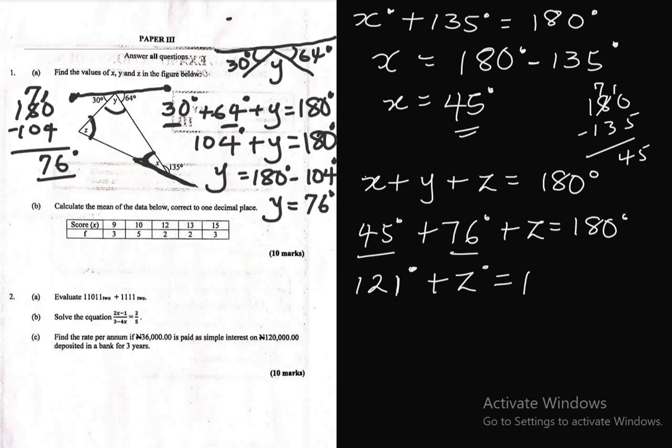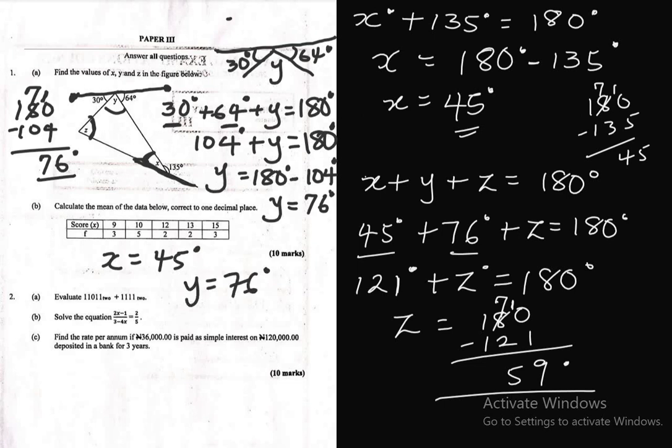Now we don't know the value of z, so let this be equal to 180 degrees. The next thing we need to sum up 45 and 76: 5 plus 6 is 11, 7 plus 4 is 11, plus 1 that's 121 degrees plus z equals 180 degrees. To get z, collect like terms. Z is equal to 180 minus 121, which moved from the left to the right hand side. Borrow one from 8, 8 reduces to 7, put the one here, this is 10 minus 1 is 9, 7 minus 2 is 5. Z is 59 degrees. So for question 1A, x is 45 degrees, y is 76 degrees, and z is 59 degrees. Here you have your answer.